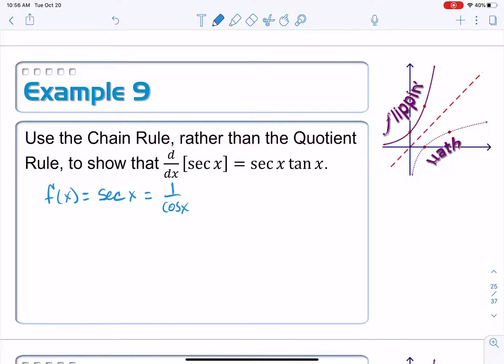But now that we have the chain rule, we can rewrite this quotient as cosine of x, and then I'm going to raise all of that to the negative 1 power. And I can use the chain rule to find its derivative because I've got a function raised to some sort of power. Don't confuse this with the inverse of cosine because it's not. It's the reciprocal of cosine.